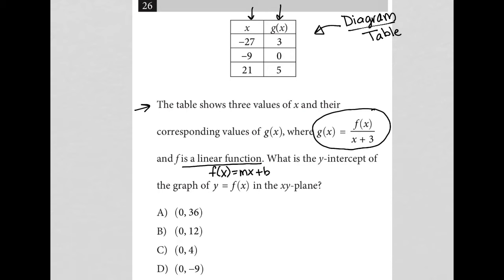What is the y-intercept of the graph of y equals f of x? Basically, we're asking what is the b value, because the b value here is the y-intercept. So we're trying to get from g of x to f of x. This equation must be the key because it relates the two things, and we have to use this information that's been provided to us. So let's get started with that.